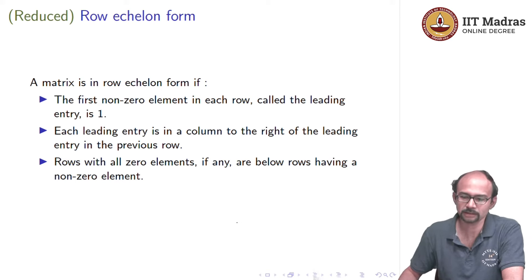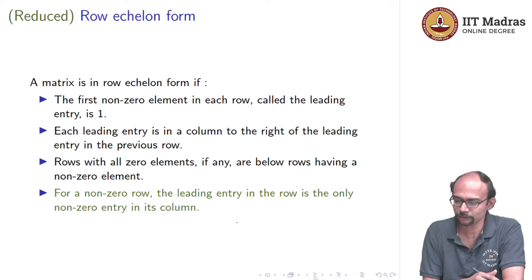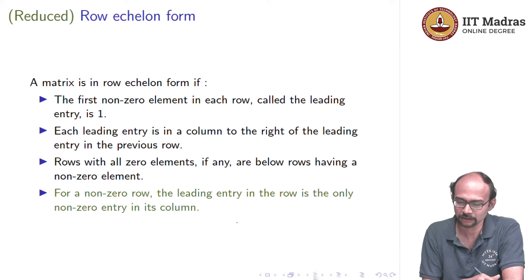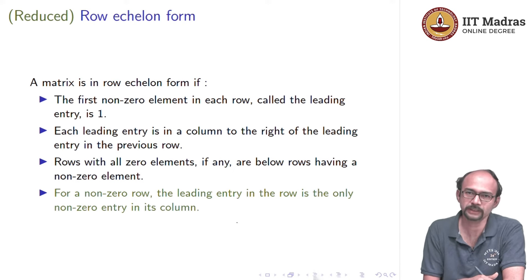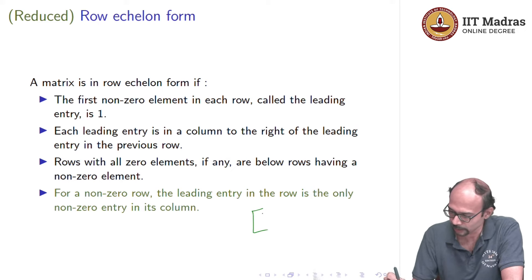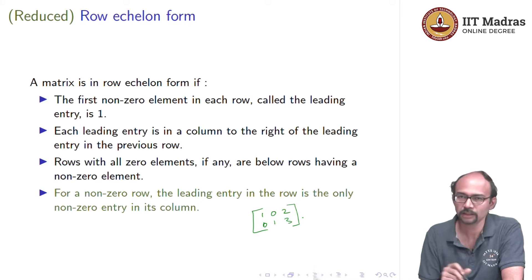If we want one further property, we look at each leading entry and examine the entire column it belongs to. From the second requirement, everything below a leading 1 is already 0. But entries above it could be nonzero. We say the matrix is in reduced row echelon form if the entries above that leading 1 are also 0. Our previous example — 1, 0, 2 and 0, 1, 3 — is indeed in reduced row echelon form.